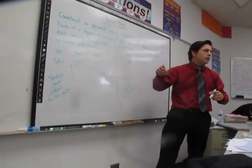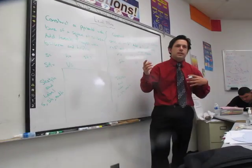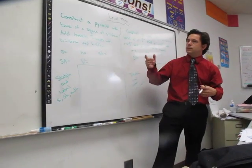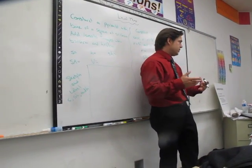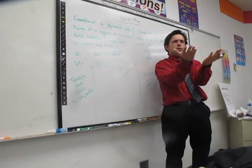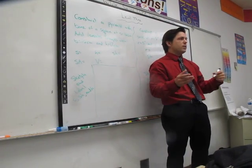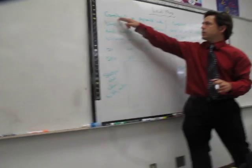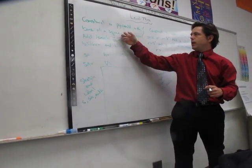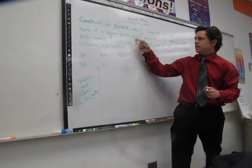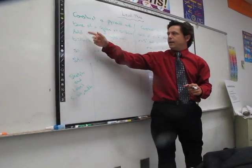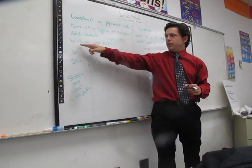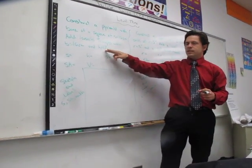Here we go with some level 3. The issue with level 3 is that it's going to come at you from multiple directions. It's basically taking you back to nets. But now instead of drawing a net, we're going to construct it. So we're constructing a pyramid with the base of a square at s equals 16 centimeters, and then we're going to add isosceles triangles with base at 16 centimeters and height at 17 centimeters.